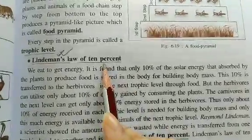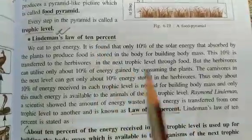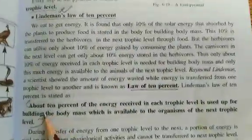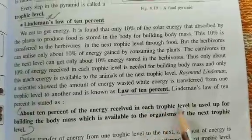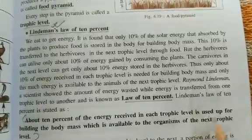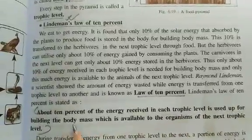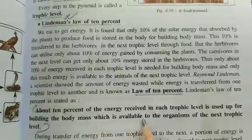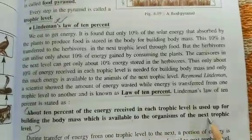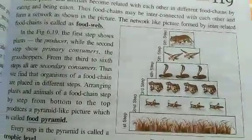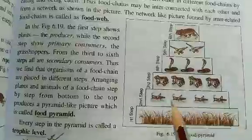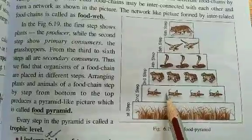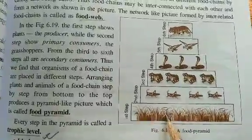First, Lindemann's Law of 10 Percent. What is Lindemann's Law? About 10 percent of the energy received in each trophic level is used up for building the body mass, which is available to the organisms of the next trophic level. For example, herbivores consume energy from the plants, from the producers.